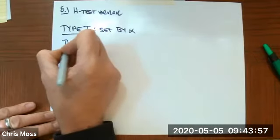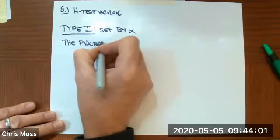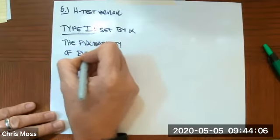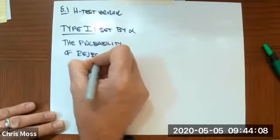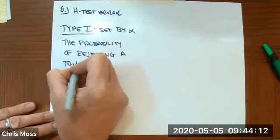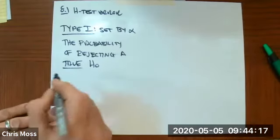And it is the probability of rejecting a true null hypothesis. So we're throwing out the null hypothesis even though it is true. It is the type 1 error.